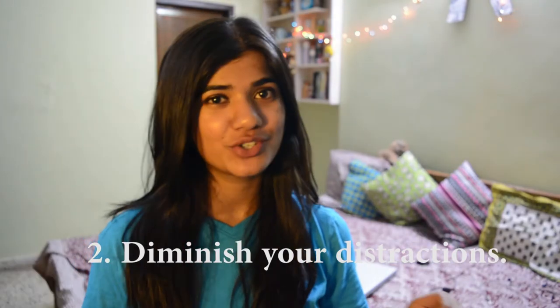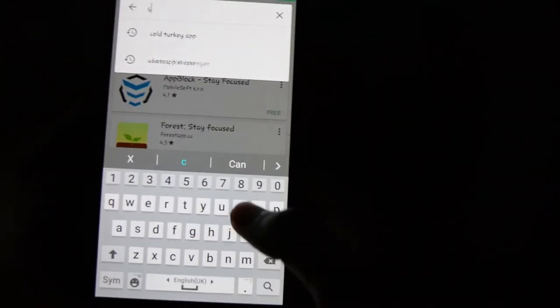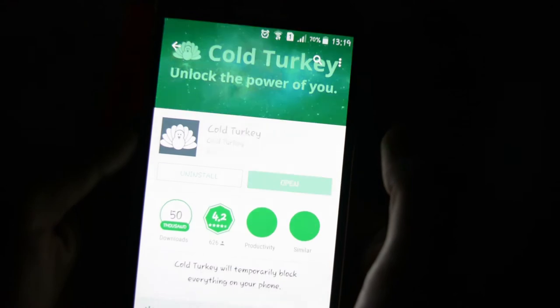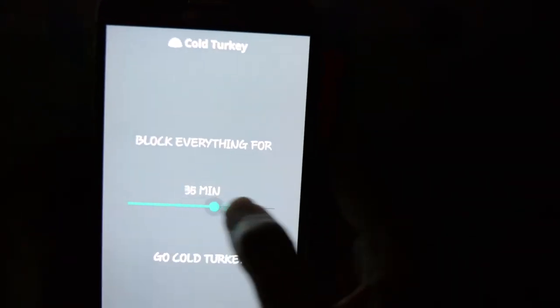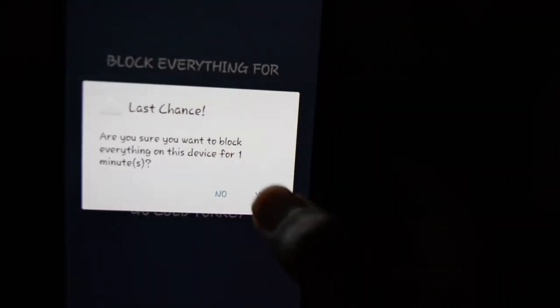Tip number two is diminish your distraction. My mobile phone is a huge source of distraction whenever I try to do anything productive with my life. I know you've been there too. So there's this app called Cold Turkey app and I would definitely recommend it. It helps you to focus better and basically it temporarily blocks everything on your phone, like it blocks every app on your phone so that you don't use it while you're studying. It helps you to set a time limit and till then you are not allowed to use any app on your phone, which is a big thumbs up.